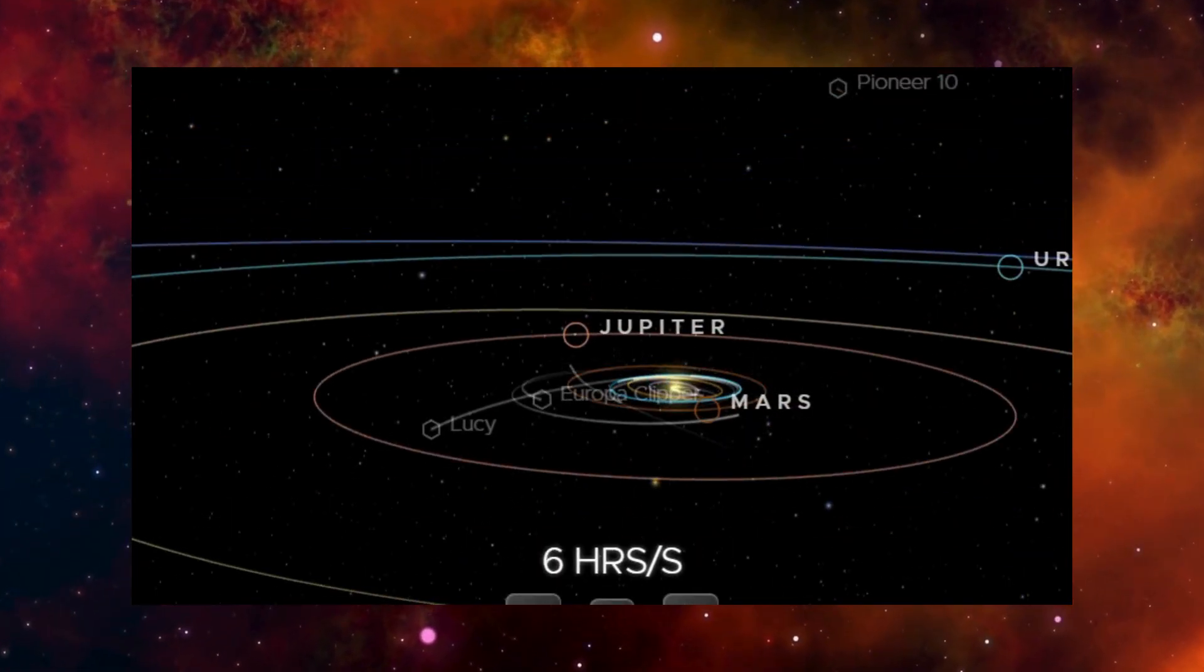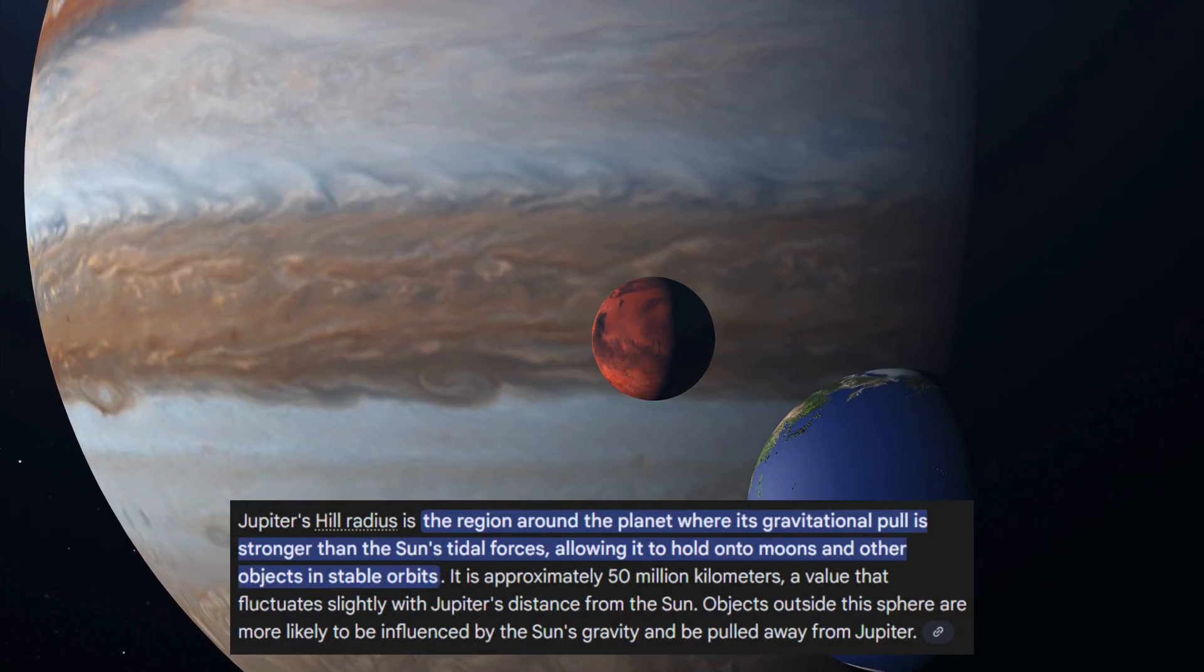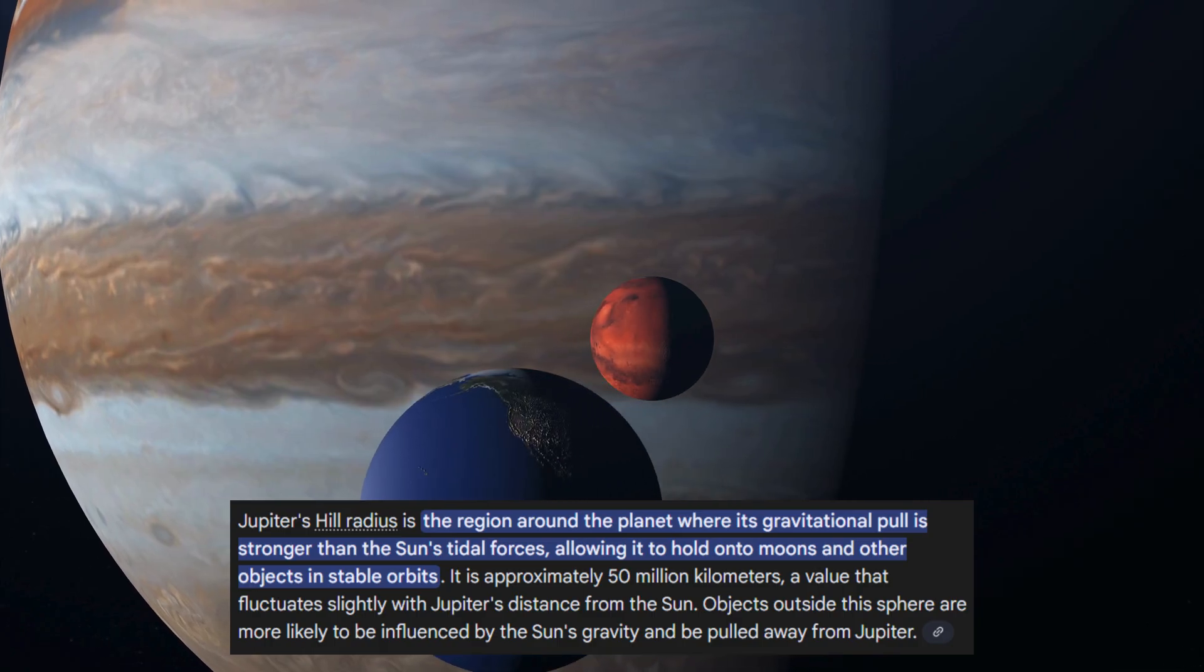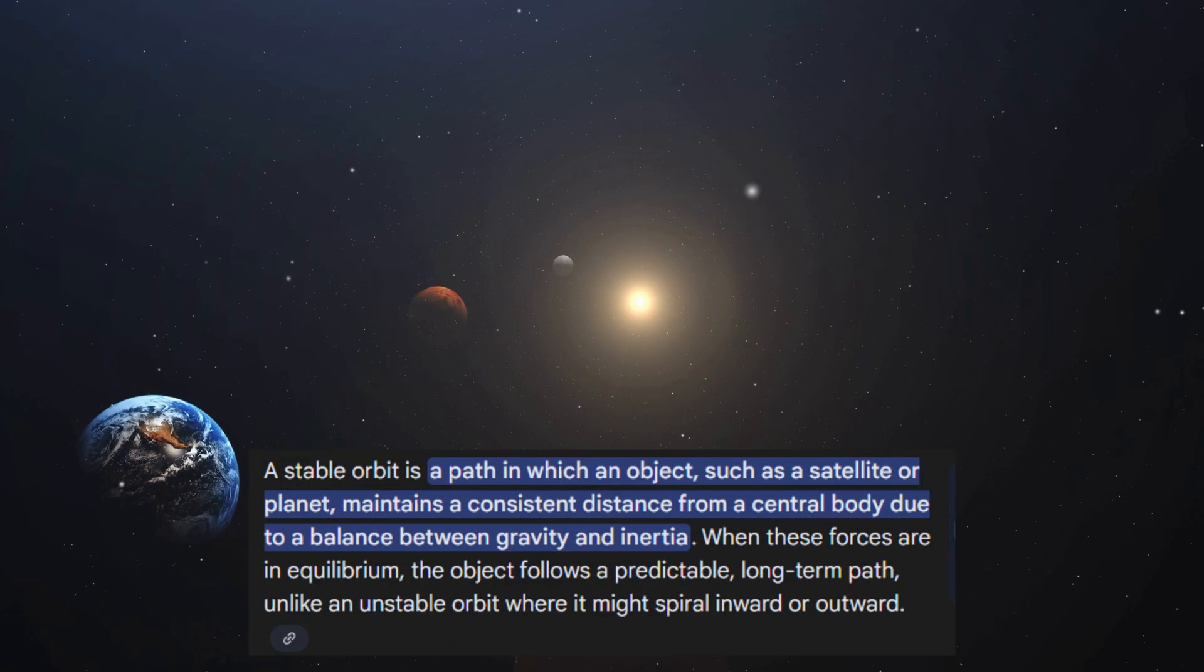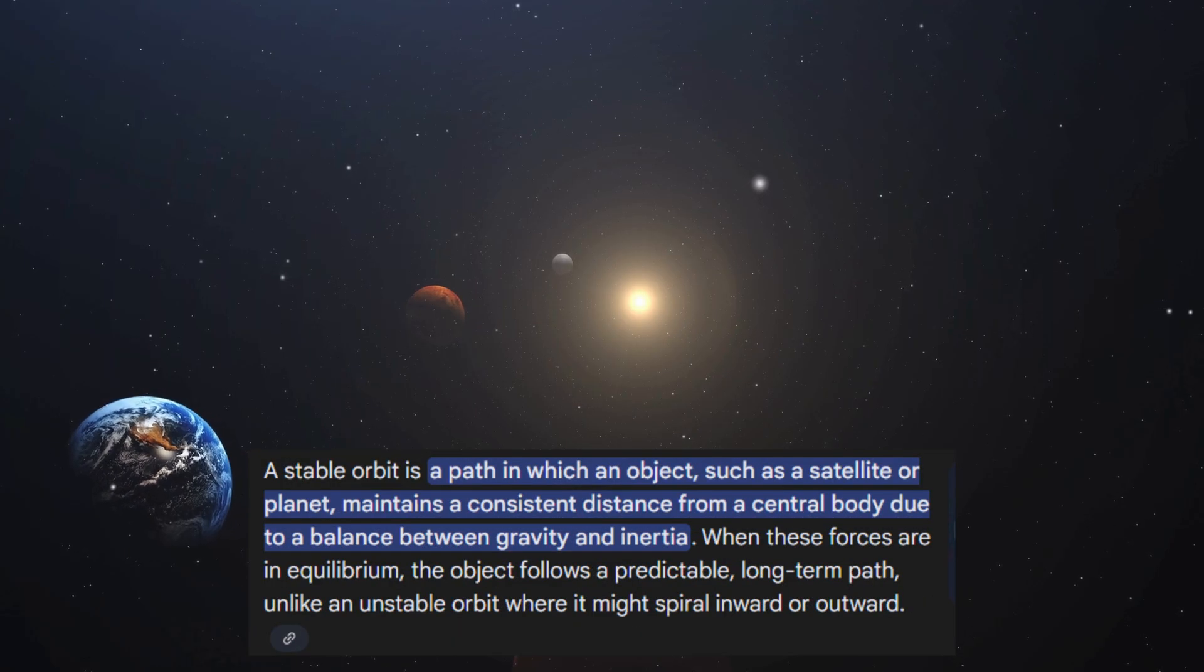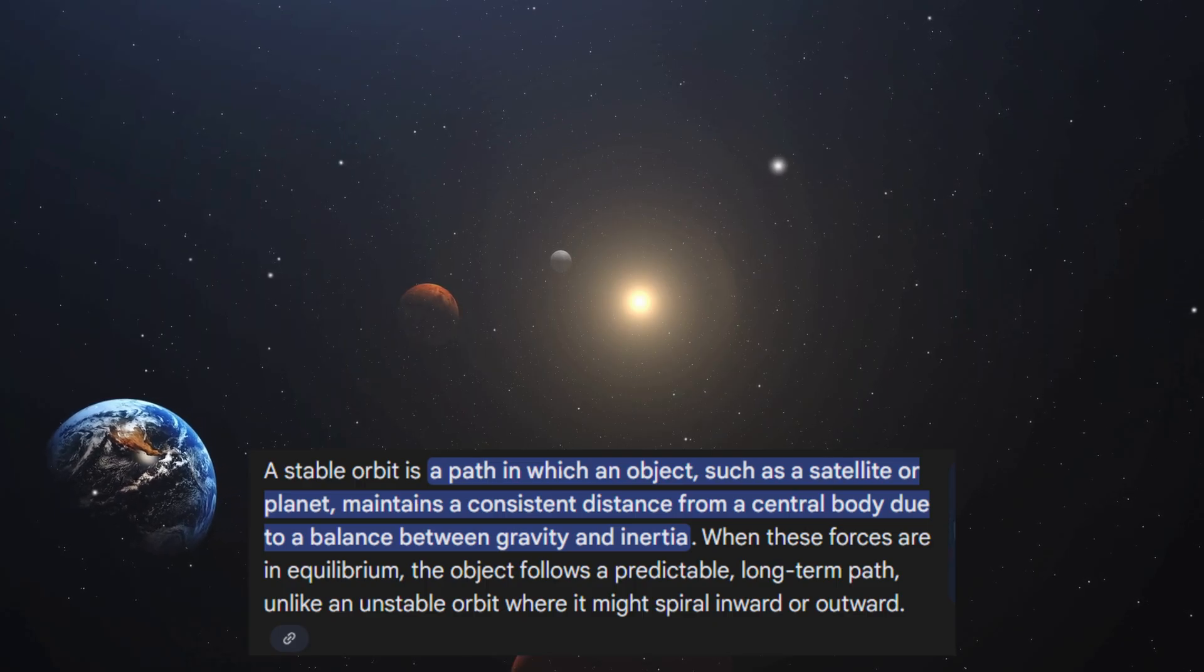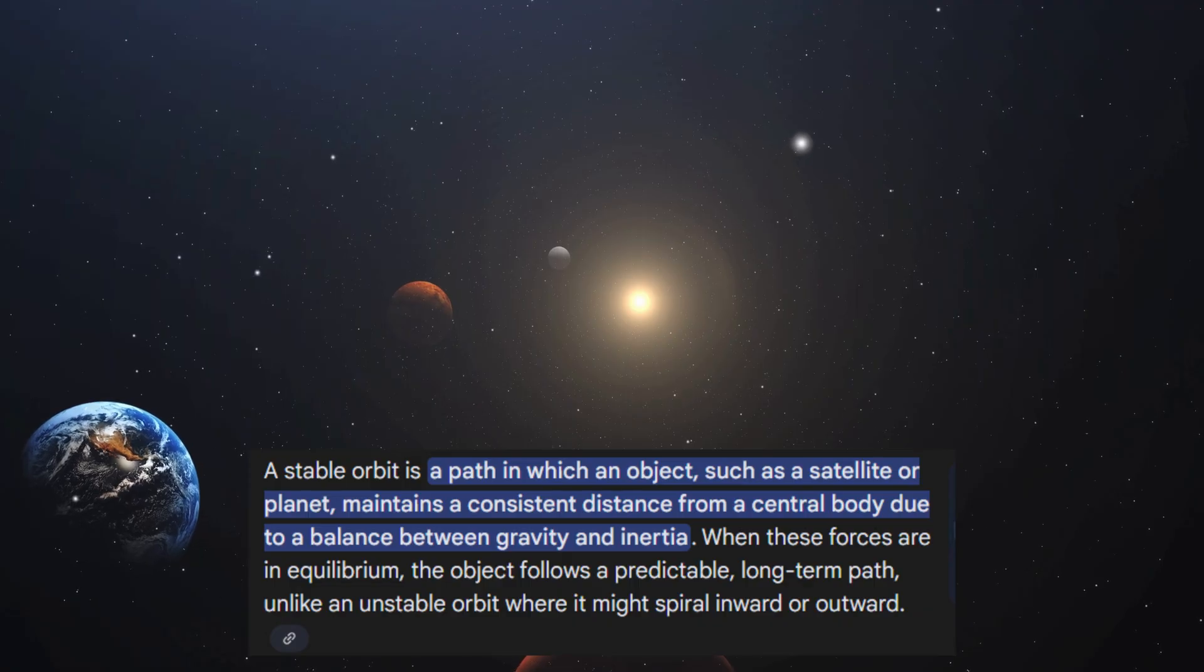Now, here's where things get interesting. Jupiter has what astronomers refer to as a hill radius. Think of it as Jupiter's invisible gravitational bubble, an enormous boundary surrounding the planet. Any object that wanders inside this bubble gets pulled into Jupiter's gravitational grip and can be captured into orbit. But anything outside the boundary stays dominated by the Sun's gravity instead.